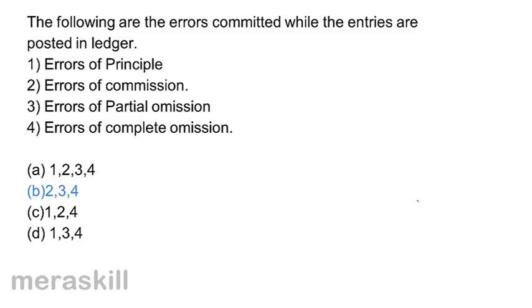Correct answer B: 2, 3, and 4. Errors of principle are committed only when recording happens — if you treat a revenue item as a capital item, that is an error of principle, which happens at recording, not posting. Errors of commission, partial omission, and complete omission of posting can happen at the time of posting in the ledger. Therefore correct answer is B: 2, 3, and 4.